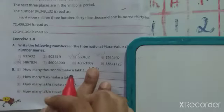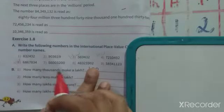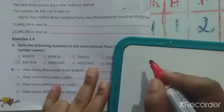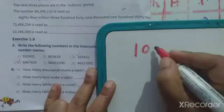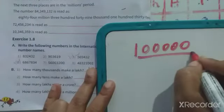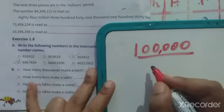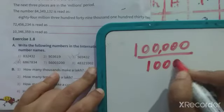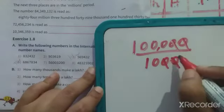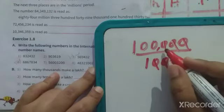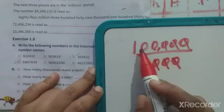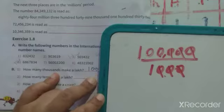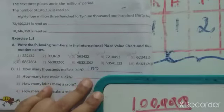Next question: how many thousands make a lakh? To find out, write 1 lakh as 1,00,000 — that is 5 zeros. Divide by 1,000. Cancel the three zeros from numerator and denominator. The remaining answer is 100. So 100 thousands make 1 lakh.